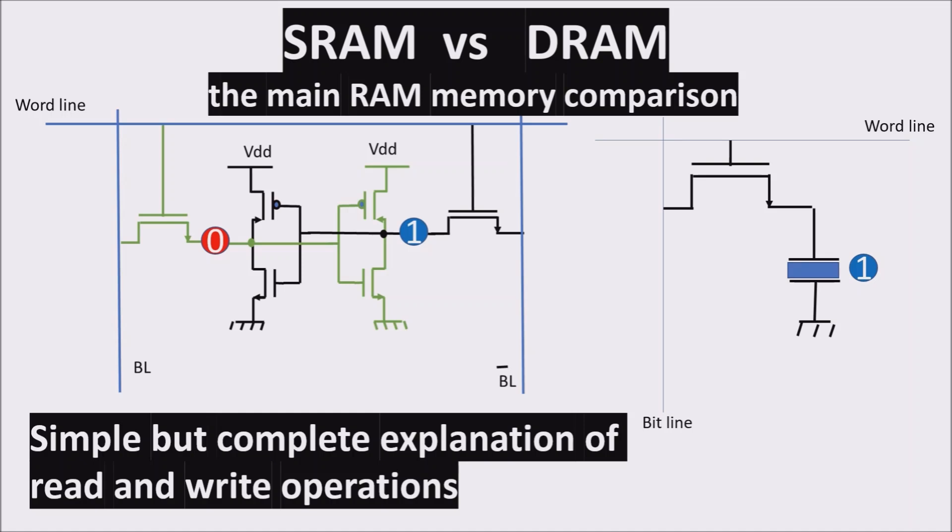In this video we talk about RAM, Random Access Memory. In particular we'll see the elementary SRAM cell and the elementary DRAM cell. We'll analyze the read and write operations and finish with pros and cons of these two types of RAM.